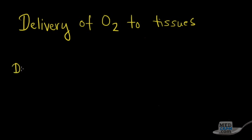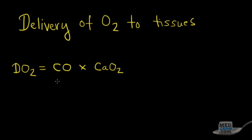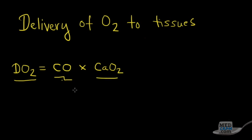The delivery of oxygen, abbreviated DO2, is equal to the cardiac output (CO) times the content of the arterial blood, abbreviated CaO2. Cardiac output is basically in liters per minute, and the concentration of oxygen in the arterial blood is in units of milliliters of oxygen per deciliter of blood. So the delivery of oxygen equals cardiac output - how fast we can deliver oxygen to the patient - times the content of that fluid.